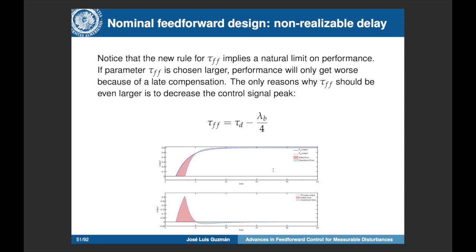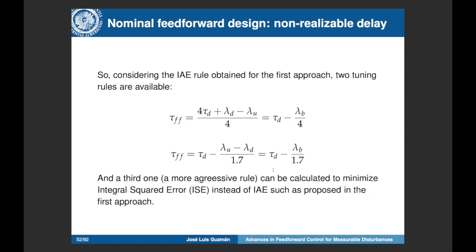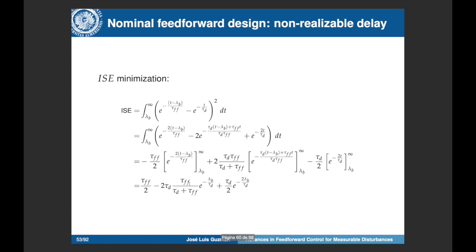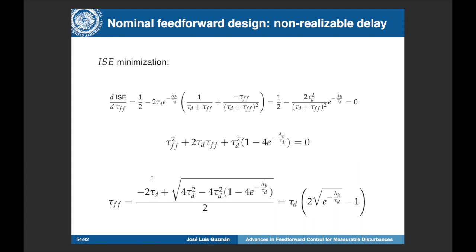It is interesting to compare this rule with the one from the previous approach — they are practically identical, differing only in the denominator of one term. So we have two tuning rules: one to completely remove the overshoot and one to minimize the IAE. We also propose a third tuning rule to minimize the ISE. Following the same procedure — calculating the ISE expression using the temporal response and minimizing with respect to the feedforward compensator time constant — we obtain the final equation.